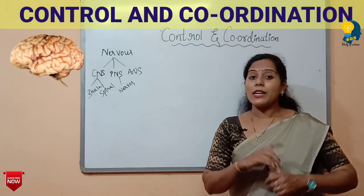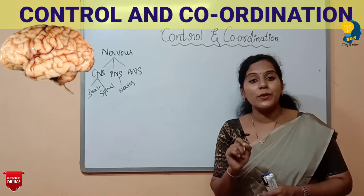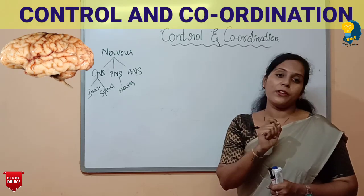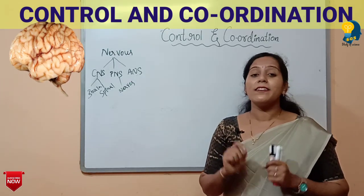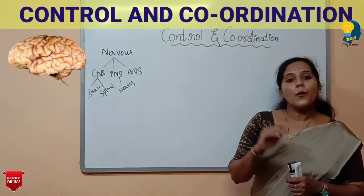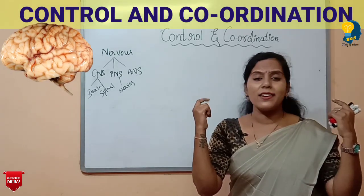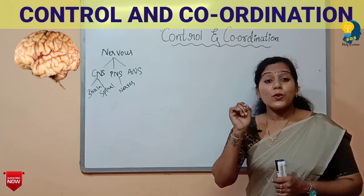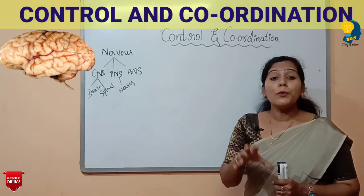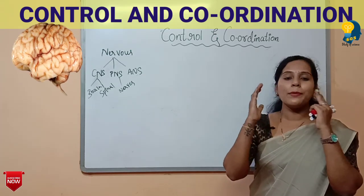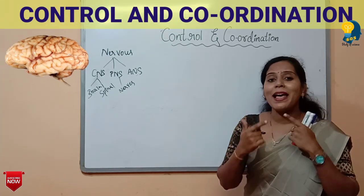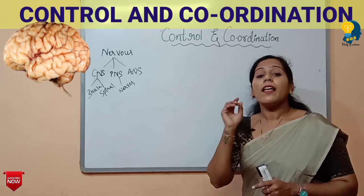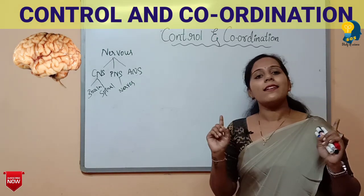Our nerve cells help us detect things that happen in our environment. Our nerve cells contain specialized tips called receptors. These receptors are found in the sensory organs — the eyes, nose, ear, skin, and tongue. The receptors in each sensory organ detect specific things: receptors in the nose detect smell, those in the tongue detect taste, and so on.